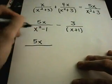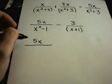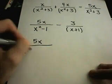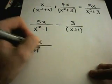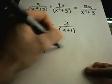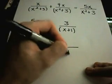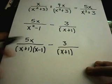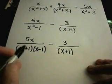So I've got 5x on top. Recall, x squared minus 1 is a difference of perfect squares. So I can factor that as x plus 1, x minus 1. x plus 1 won't factor any further, so I'll just leave it alone. And again, now I look at my fractions.